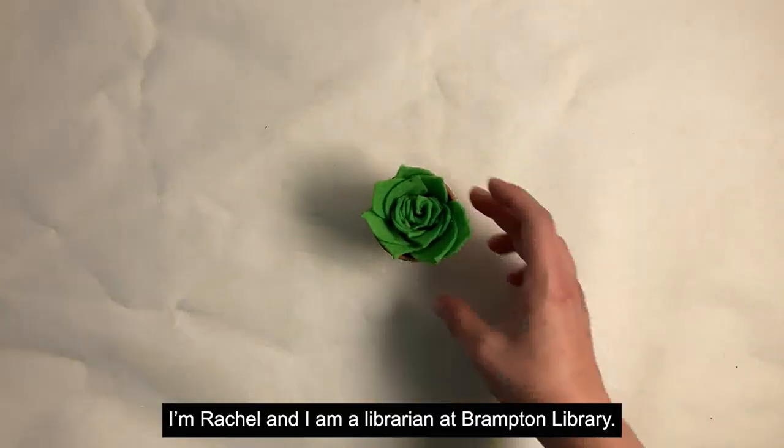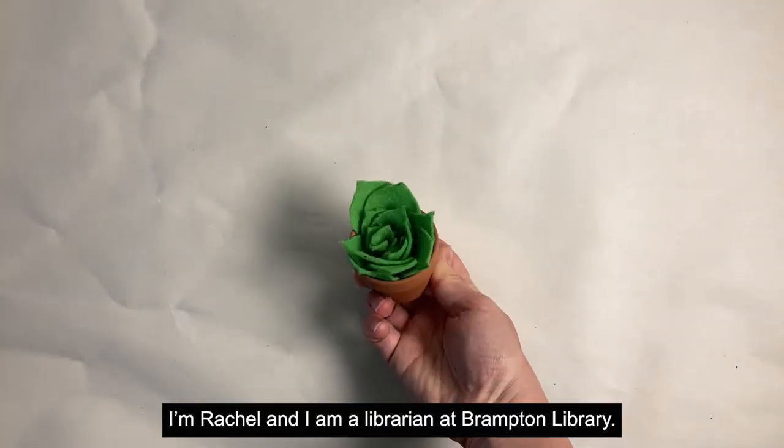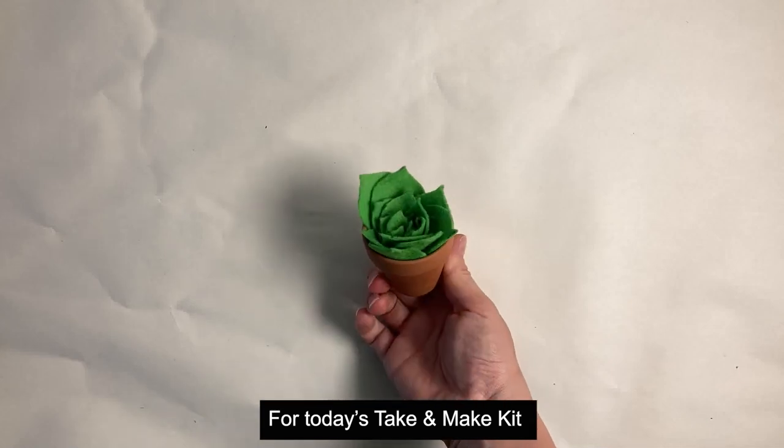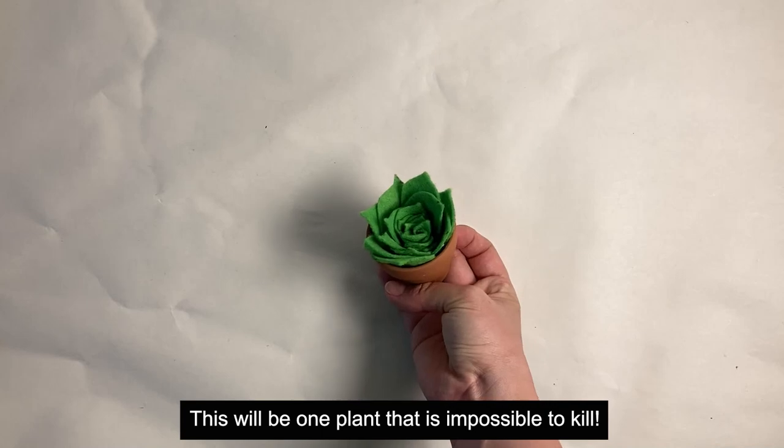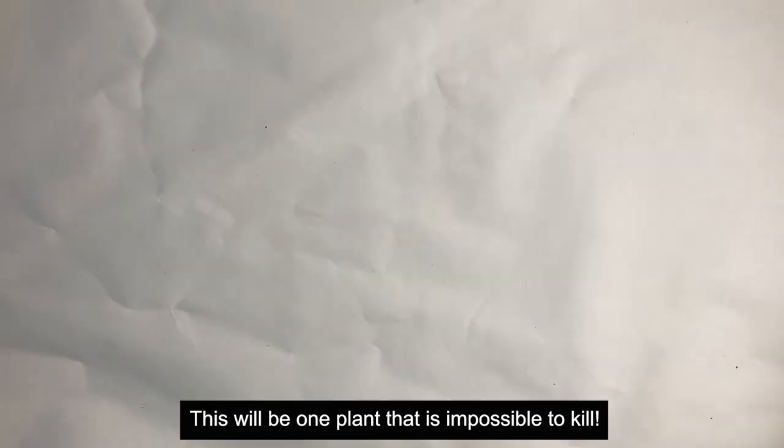Hello everyone, I'm Rachel and I am a librarian at Brampton Library. For today's take and make kit we are going to make a decorative succulent plant out of felt. This will be one plant that is impossible to kill.